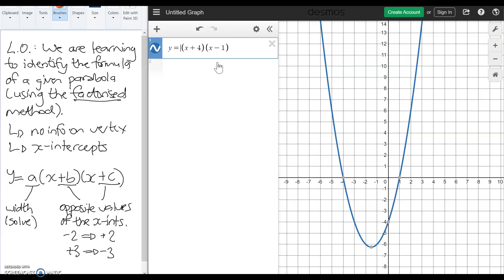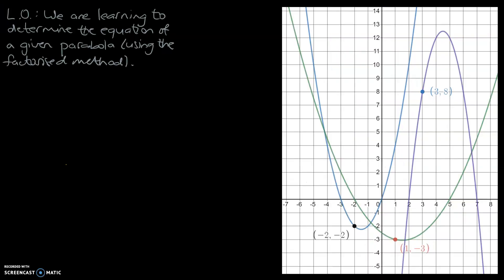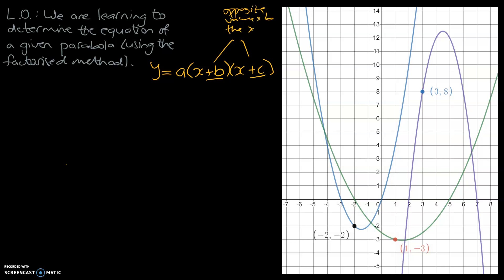Hopefully you found this short explanation on Desmos about the x-intercept method useful. Now we're going to go back to PowerPoint and go through two or three graphs to help you identify the formula of given graphs. Please pause the video, make sure you get those notes and learning objectives down, and then we'll get into some examples. We're back on PowerPoint. Our formula again: y equals a times (x plus b) times (x plus c). The b and c are the opposite values to the x-intercepts, and a we have to calculate.